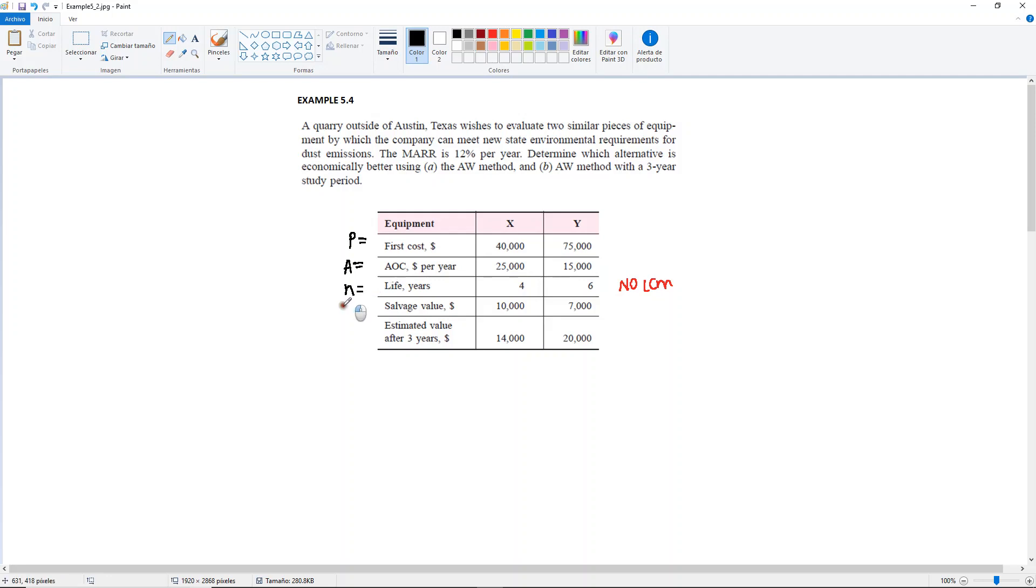Then we have the salvage value, which is your F. There's another value here, the estimated value after three years. We're going to come back to this one in a bit because that one refers to part B. For part B we're going to be using a study period. Yes, we can still evaluate the alternatives over a study period if we want to. But if they just ask for the annual worth method without giving you a study period, just know that you do not need the LCM. So for now, let's focus on this part of the information and solve for part A.